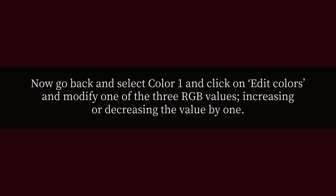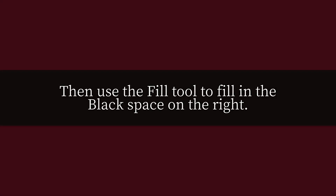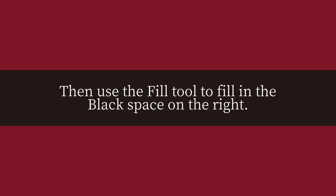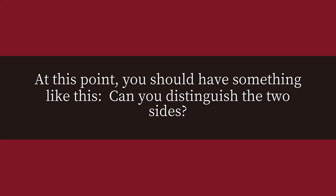Now go back and select Color 1, click on Edit Colors, and modify one of the three RGB values — increasing or decreasing the value by one. Then use the fill tool to fill in the black space on the right. At this point you should have something like this. Can you distinguish the two sides?